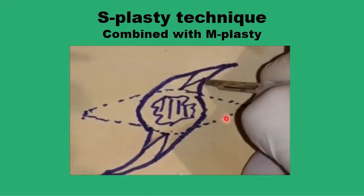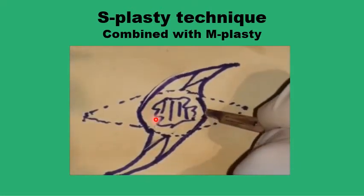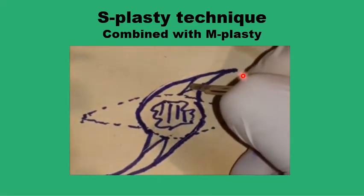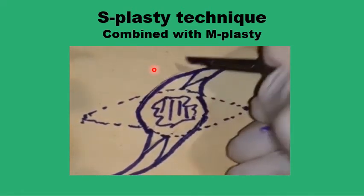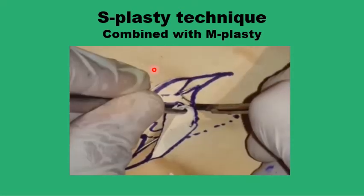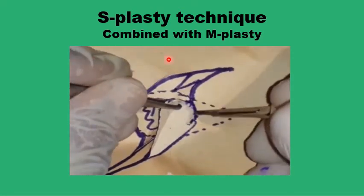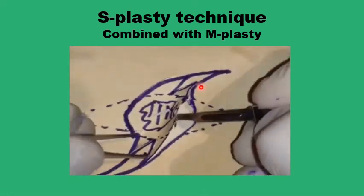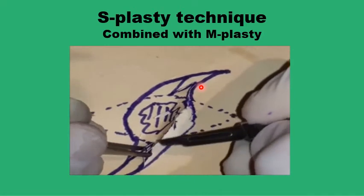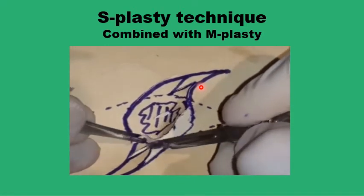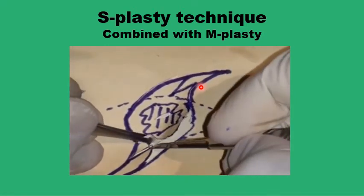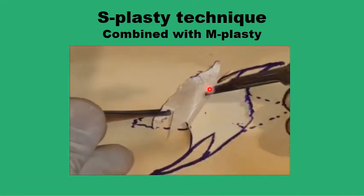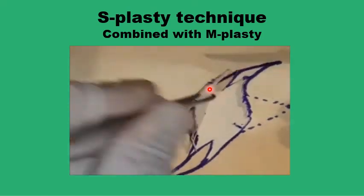You can also change the direction of the wound itself to avoid important structures in the face. The same problem exists with the amyplasty — you are left with too many acute angles that must be realigned using the three-point junction or corner stitch very precisely. However, this comes with the advantage of tissue preservation and redistribution of tension.